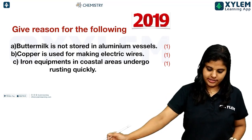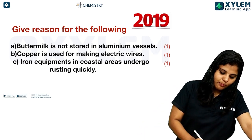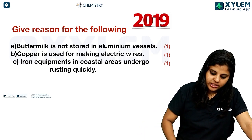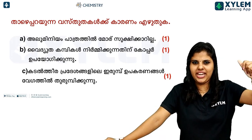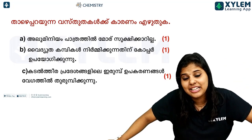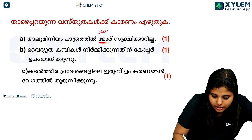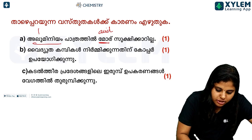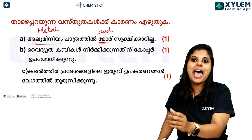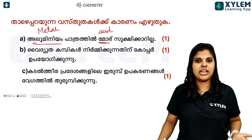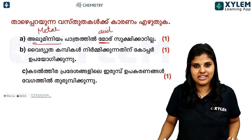Moving to the next question: Give a reason — buttermilk is not stored in aluminium vessels. Buttermilk is acidic, and aluminium is a reactive metal. The acid in buttermilk reacts with the aluminium metal, which is the reason it cannot be stored in aluminium vessels.